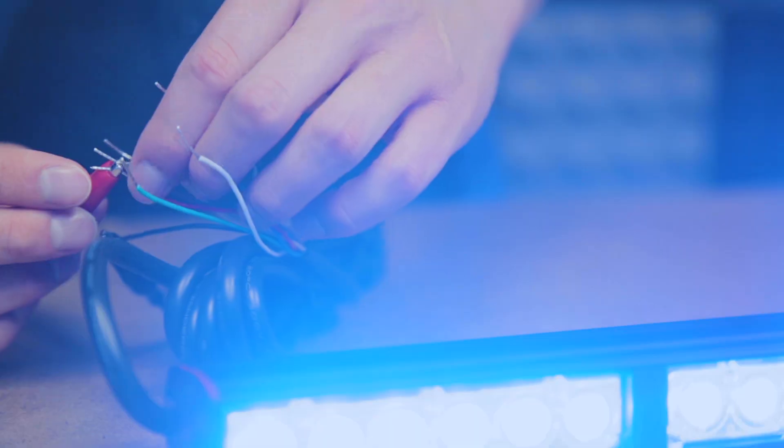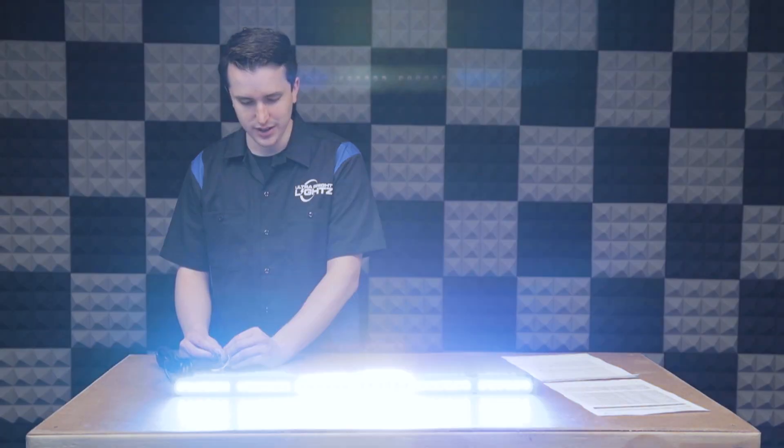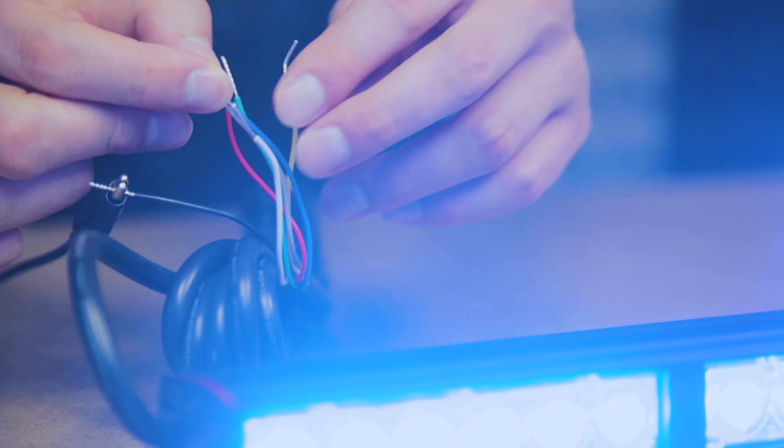The blue and gray wires are for your traffic advisor function. One is for left, one is for right, and connecting both together simultaneously will be centered out.